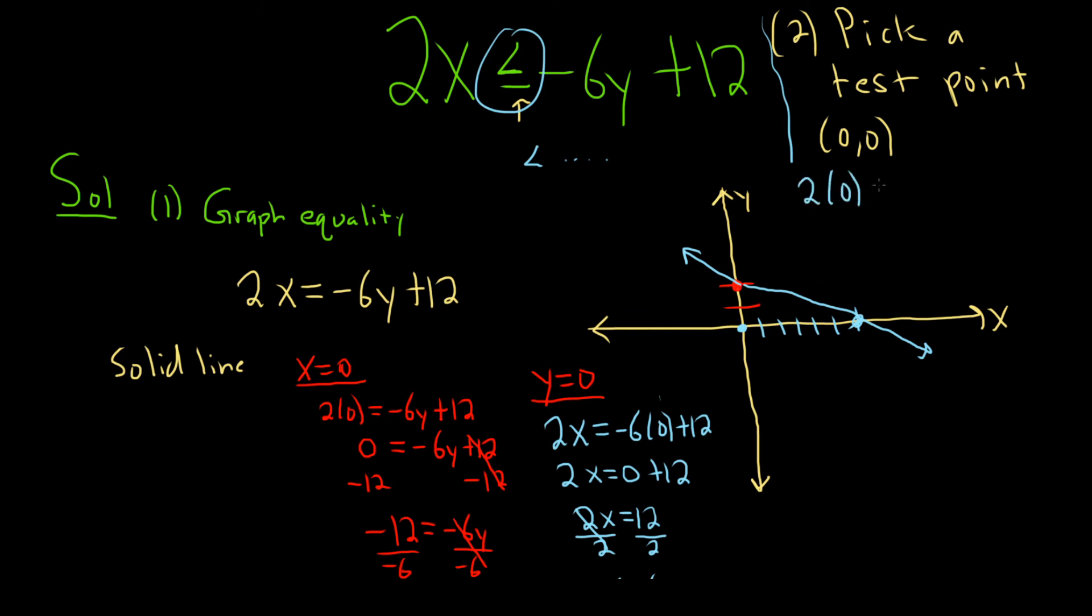So 2 times 0, less than or equal to, less than or equal to, negative 6 times 0, plus 12. So 0 is less than or equal to 0 plus 12. So 0 is less than or equal to 12.